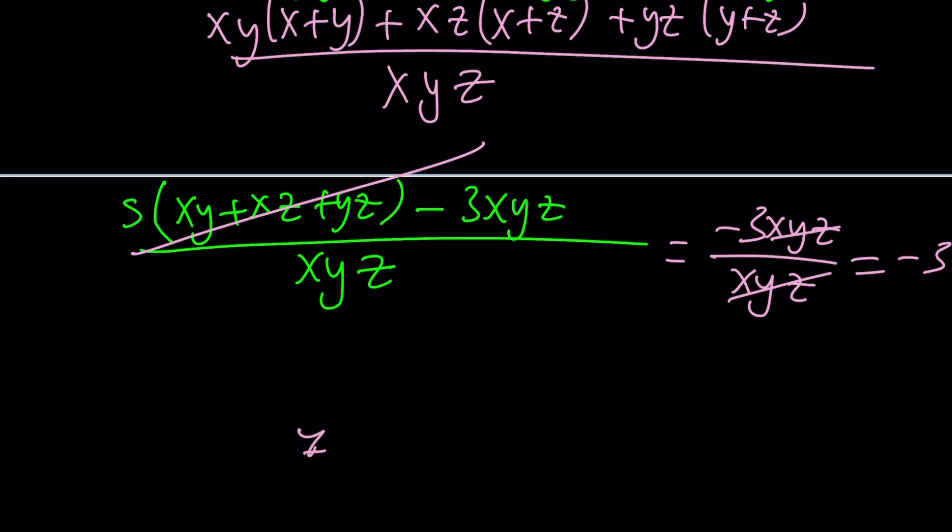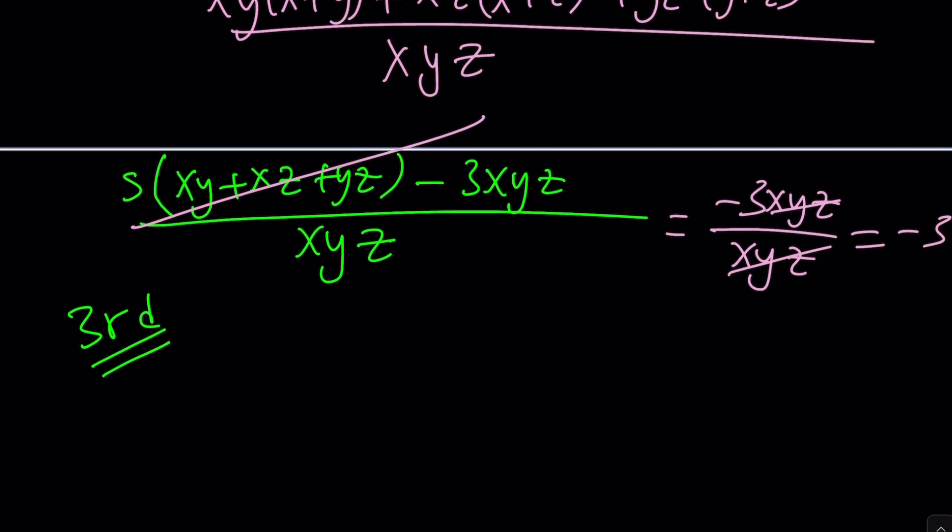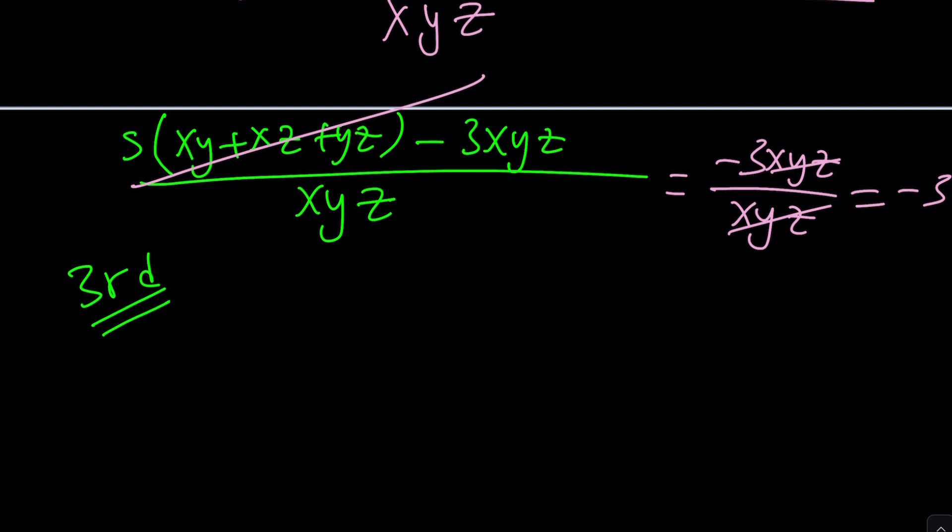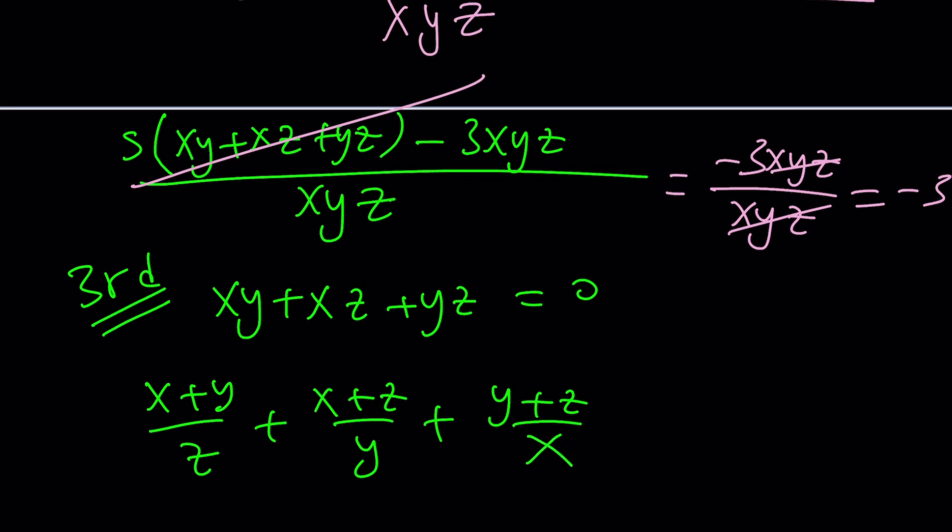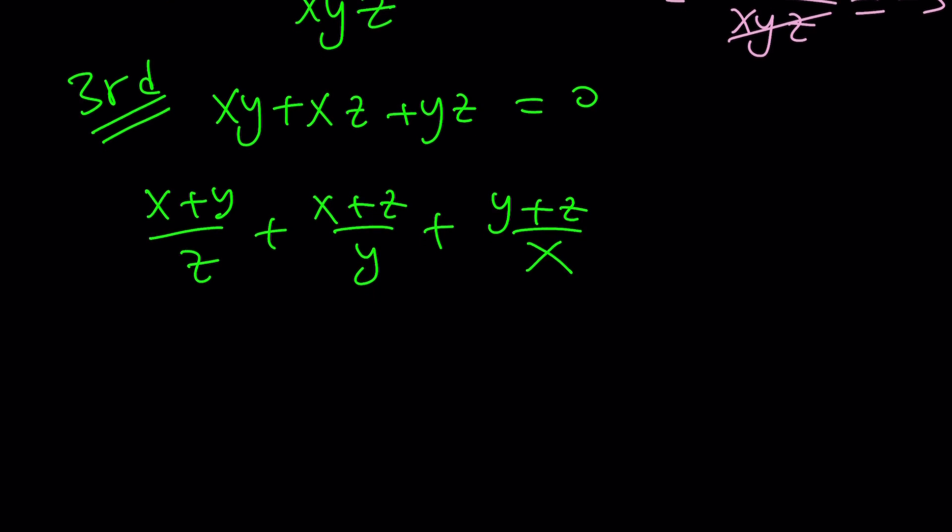Now let's go ahead and take a look at the third method because I think that's also very cool but you're going to get to decide which method do you like the best. We have xy plus xz plus yz is equal to zero and we're supposed to evaluate (x+y)/z plus (x+z)/y and (y+z)/x numerically. We already know the answer but let's just go ahead and test it out for fun.